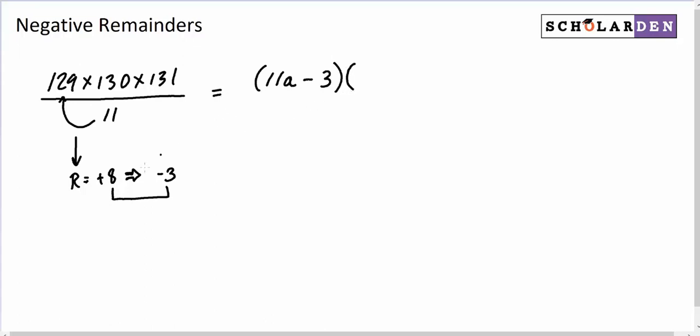And then I'm going to use the same logic for 130. 130 had a positive remainder of 9, which implies a negative remainder of 2. So 130 is 11 times that number with a negative remainder. Then 131 had a positive remainder of 10, implying a negative remainder of 1. And we have 11 times some number minus 1.